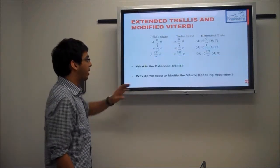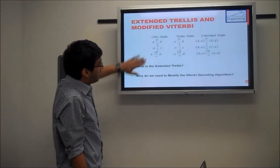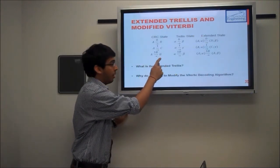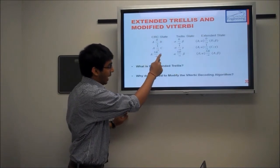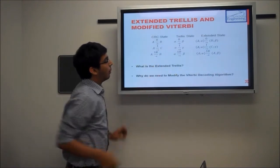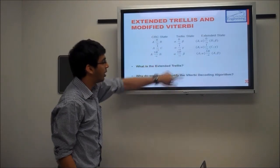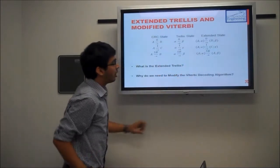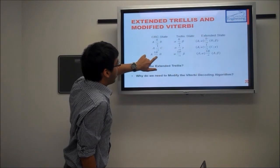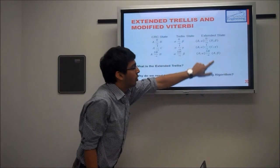Whenever there is a stuffed bit received, there should be a transition going on from state A to state A. So whenever you receive a stuffed bit, the CRC state remains the same but there is a transition going on in the trellis state which is from alpha to beta. So in the extended state, the transition corresponding to the CRC is A to A and the transition corresponding to the trellis is alpha to beta.